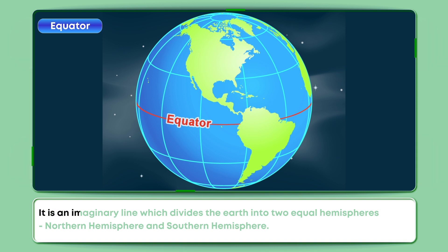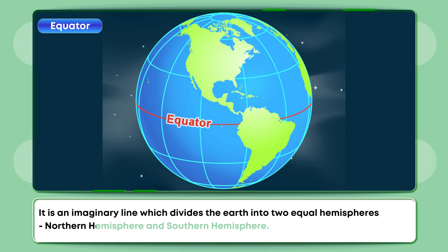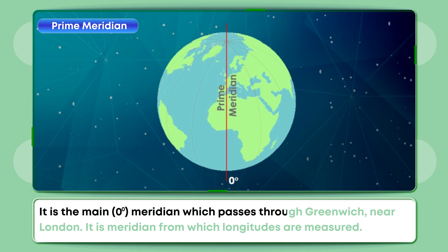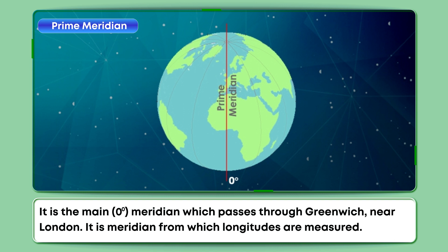Equator: It is an imaginary line which divides the Earth into two equal hemispheres — the Northern Hemisphere and the Southern Hemisphere. Prime Meridian: It is the main zero degrees meridian which passes through Greenwich, near London. It is the meridian from which longitudes are measured.